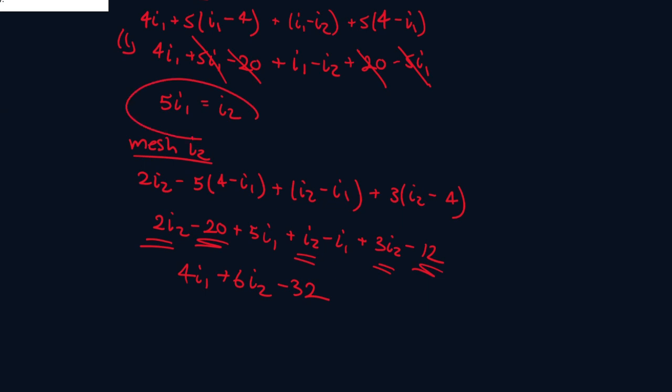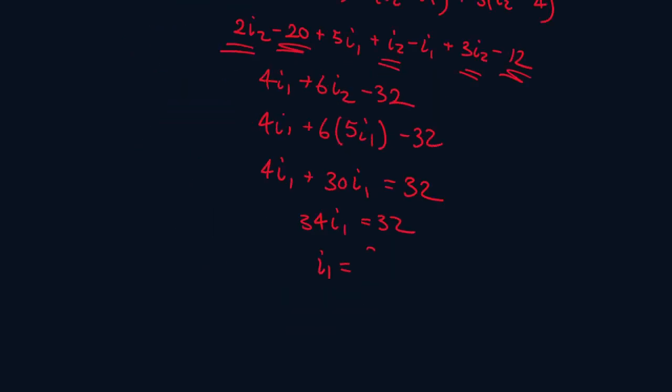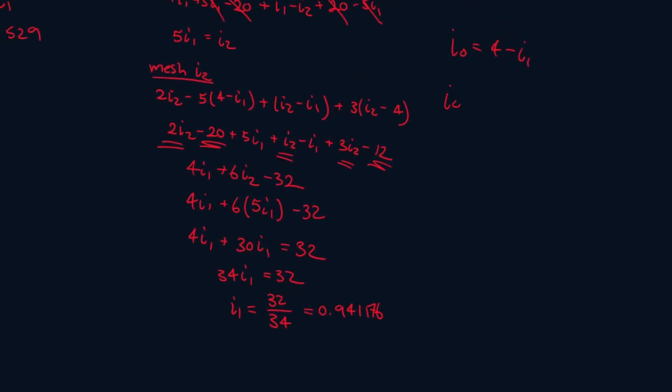Now we know that I2 is equal to 5I1. Now let's solve for I1. 32 divided by 34. That gives you 0.941176. So now we can find I0. I0 will be 4 minus 0.941176. And that gives you 3.0588.